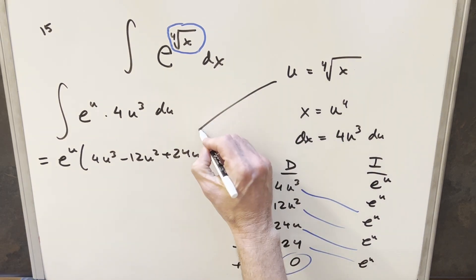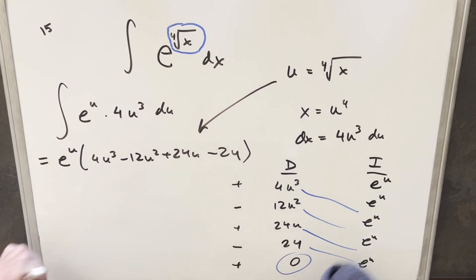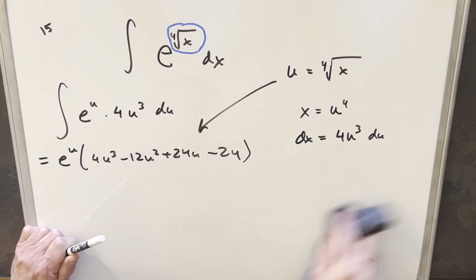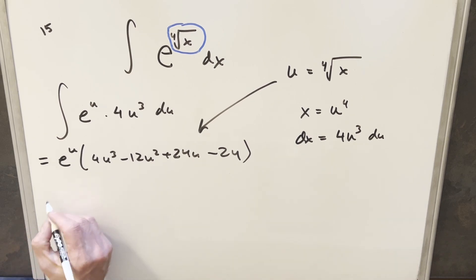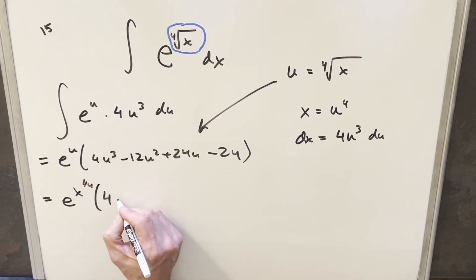And then all we need to do is just back substitute in order to finish this off. But I think I'll make a little more space just so I don't run into problems. Okay, so writing down the final solution, I think this first part, I'll write this as e to the x to the one fourth. I just want to be consistent with these powers because it's going to be all over the place. Then this one I'll write as 4x to the three fourths.